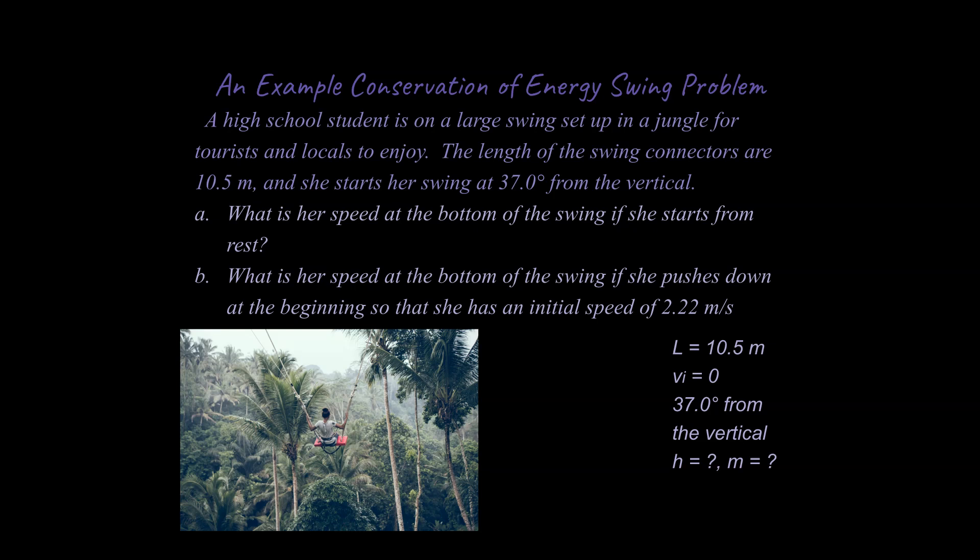So it says a high school student is on a large swing set up in a jungle for tourists and locals to enjoy. The length of the swing connectors are 10.5 meters, and she starts her swing at 37 degrees from the vertical. What is her speed at the bottom of the swing if she starts from rest? What is her speed at the bottom of the swing if she pushes down at the beginning